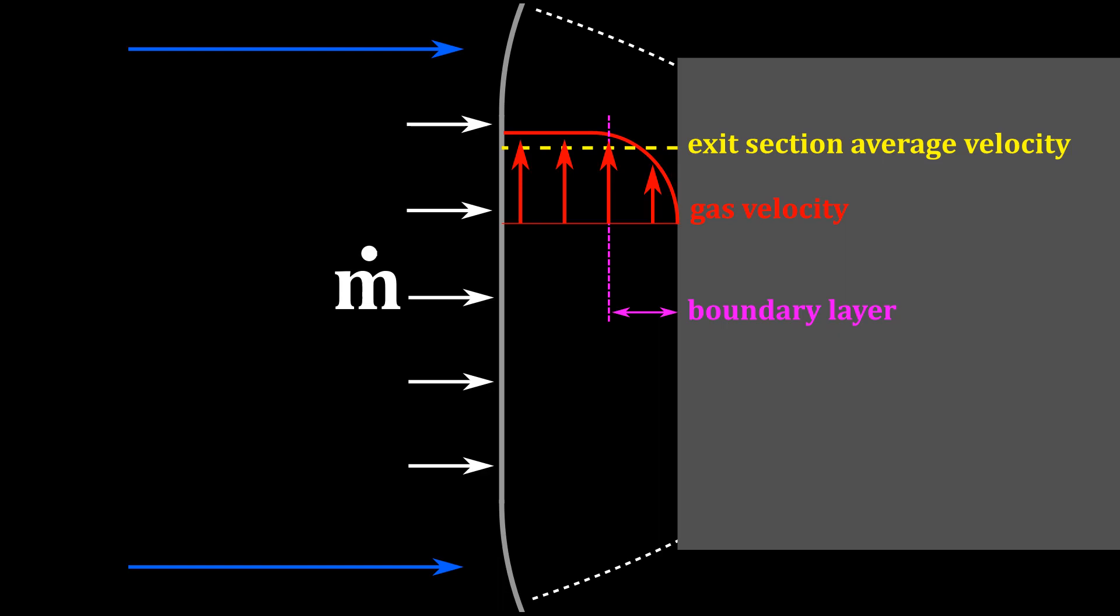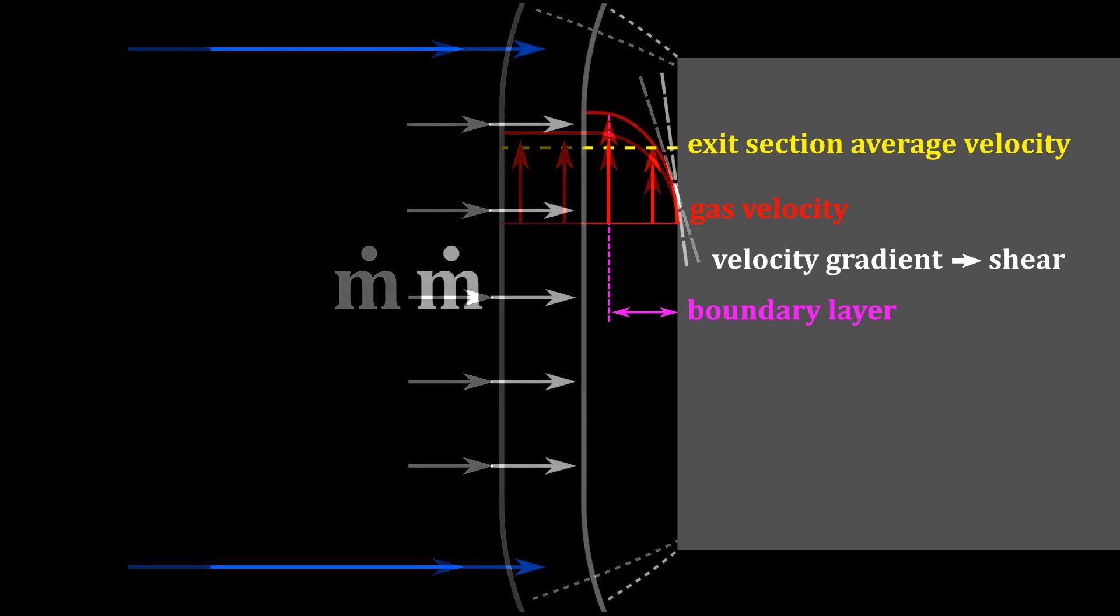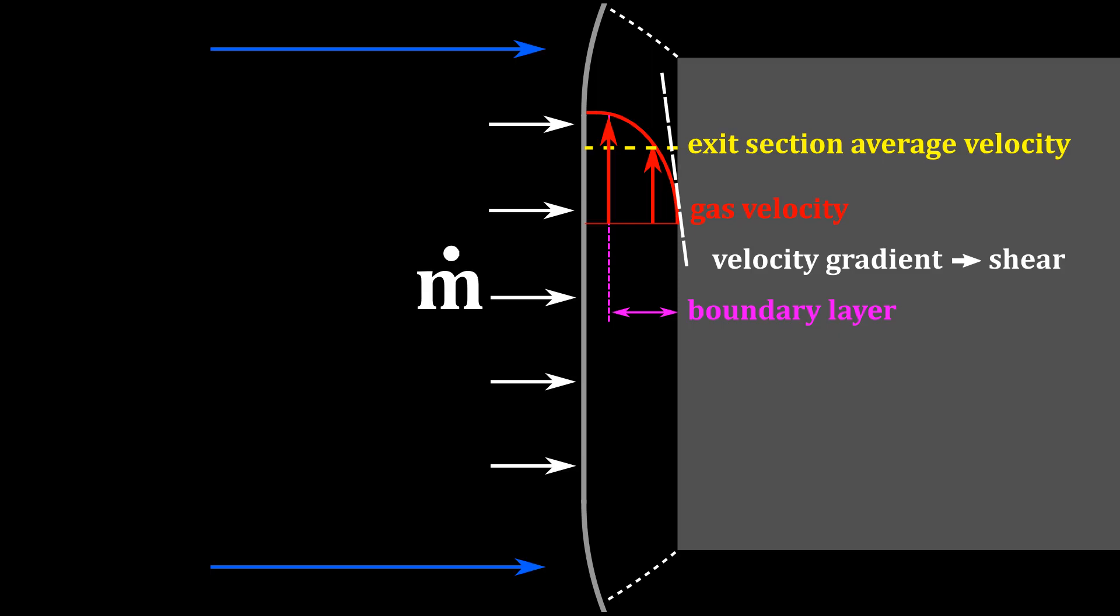The slope of the velocity profile in the boundary layer at the wall is what we're interested in. The steeper this gradient is at the wall, the greater the viscous effects and heating of the body. If the shock wave is very close to the body, the flow channel is very narrow and the slow boundary layer takes up a considerable portion of the flow thickness. In order to maintain the average mass flow rate required at the exit section, the free stream portion must move very fast to compensate for the boundary layer deficit. This large variation in velocity creates a steep slope in the velocity profile and therefore increased heating of the body.